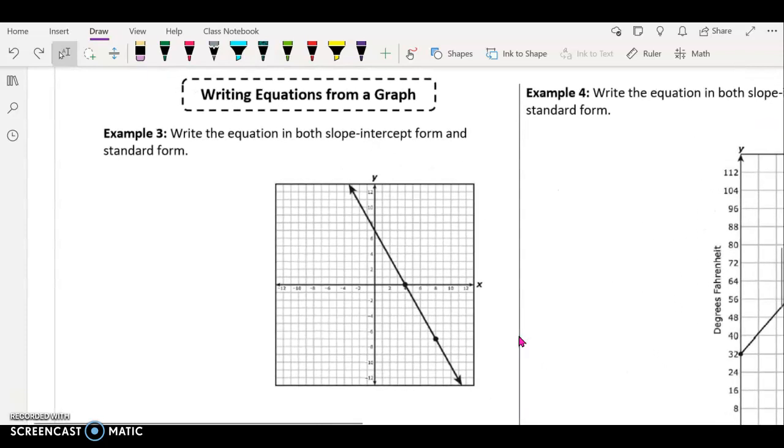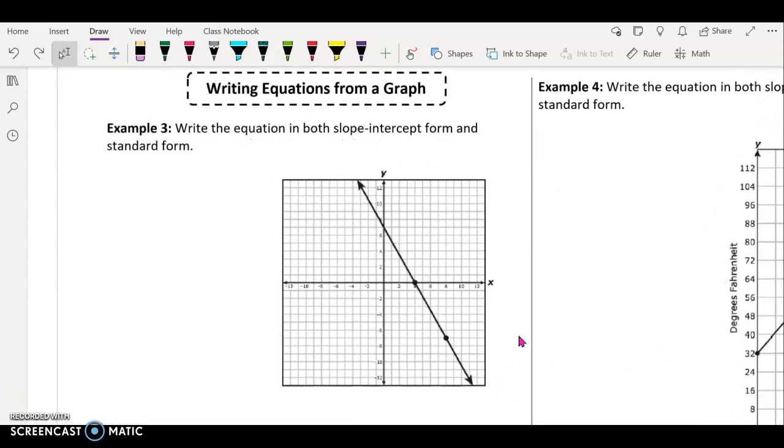We are looking at example three and we're given a graph. We're trying to write the equation in both slope intercept form and standard form. So we're going to start with slope intercept form because we should know by looking at this graph what is the m. Remember m is slope, and what is the b, which is the y-intercept.